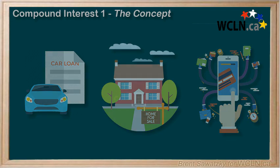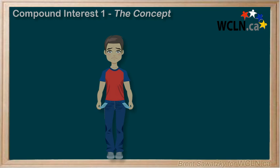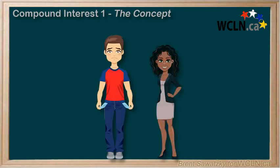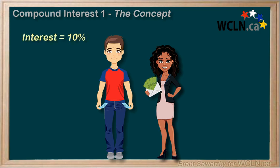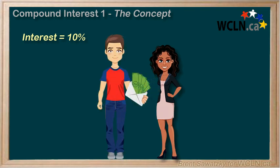Consider this. Jerry's a little light on cash and asks Linda if he can borrow $500. Linda says yes and clarifies that Jerry will pay Linda 10% per year in interest for borrowing the money. Jerry says great and the money is handed over.